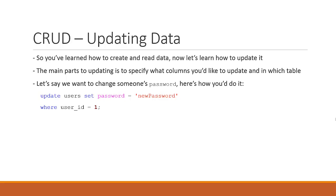We always want to mention what columns — think about what we have in a table. We have a bunch of columns inside of a table. Inside our users table we have a username, password, and email. If we're going to be updating data we need to tell it which columns we wish to update. For example, if we want to change someone's password, we say UPDATE users and then tell it what column to modify.